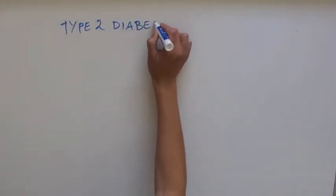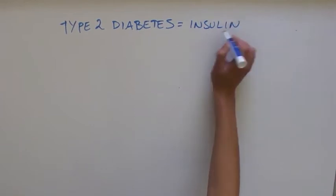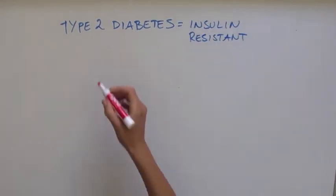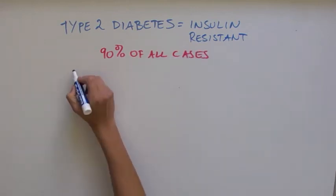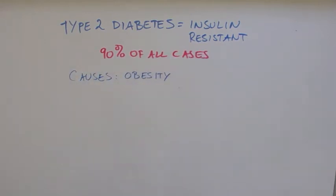These scientists studied type 2 diabetes, or insulin-resistant diabetes. Type 2 diabetes makes up about 90% of all cases of diabetes. One of the main causes of type 2 diabetes is obesity.